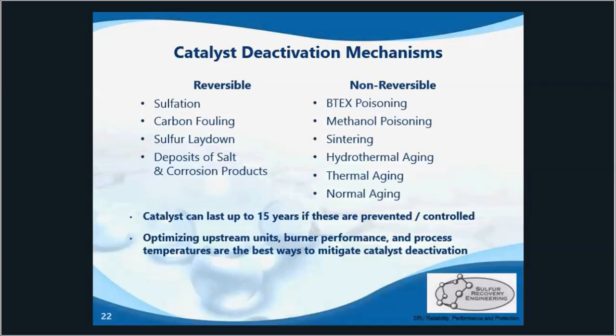Sulfation of the catalyst occurs when excessive free oxygen is carried over from either the reaction furnace or direct fired reheaters. Hydrothermal aging results when the catalyst is exposed to excessive amounts of water vapor over a long period of time. This could be due to a serious tube or tube sheet leak from the waste heat boiler or condensers, but the actual physical mechanism is still not completely understood.